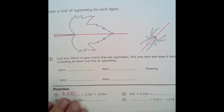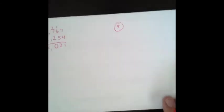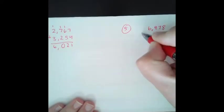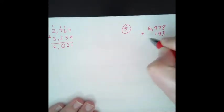So number 5 is 193 plus 6,978. So again, I'm going to stack those. And when I'm stacking the numbers, I like to stack the number with the most digits first. So that would be 6,978 plus 193. So 8 plus 3 is 11. Carry the 1. 9 plus 1 is 10, plus 7 is 17.